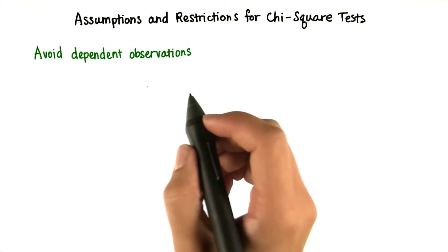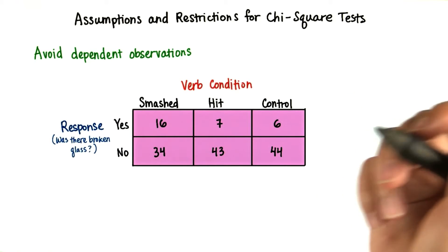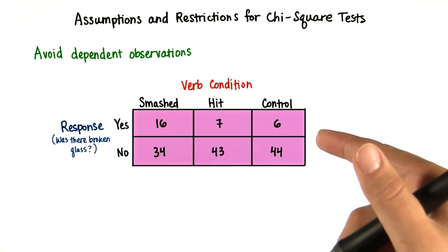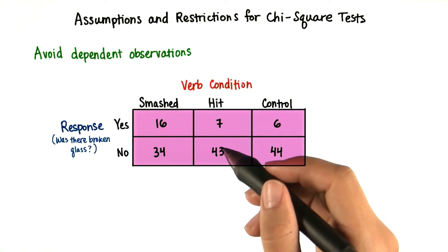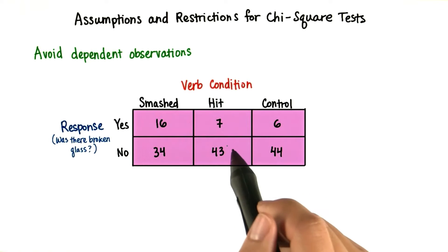First of all, we have to avoid dependent observations. In the case of the Loftus and Palmer study, the car crash one, independence would be violated if the participants contributed to data in more than just one of these cells.